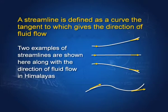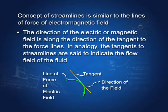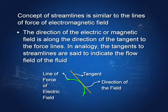Here are two more examples of streamlines. Take this streamline — the tangent to it is in a certain direction, so that is the direction of flow. The concept of streamlines is similar to the concept of lines of force in an electric or magnetic field: the tangent to a line of force gives the direction of the field. Similarly, the tangent to the streamline at a point gives the direction of flow. Just as two lines of force cannot cross each other because we must have a unique direction of the field at that point, two streamlines also do not cross, because at a given point you cannot have two directions of flow — you must have a unique direction.